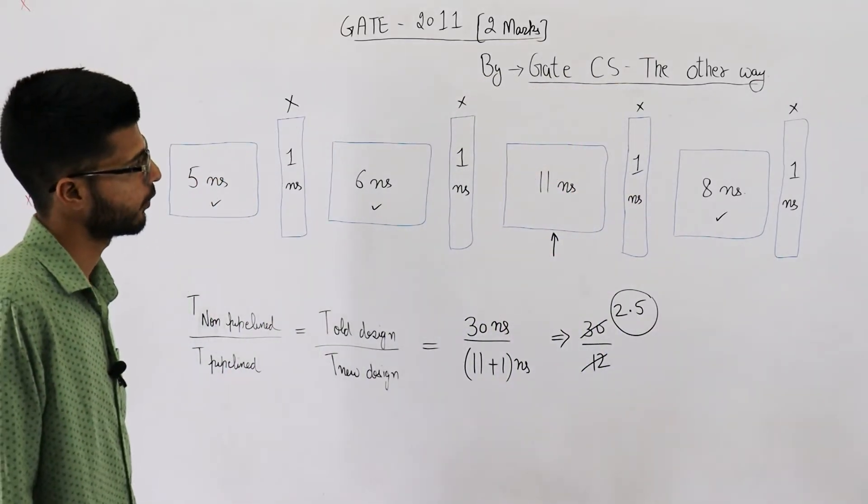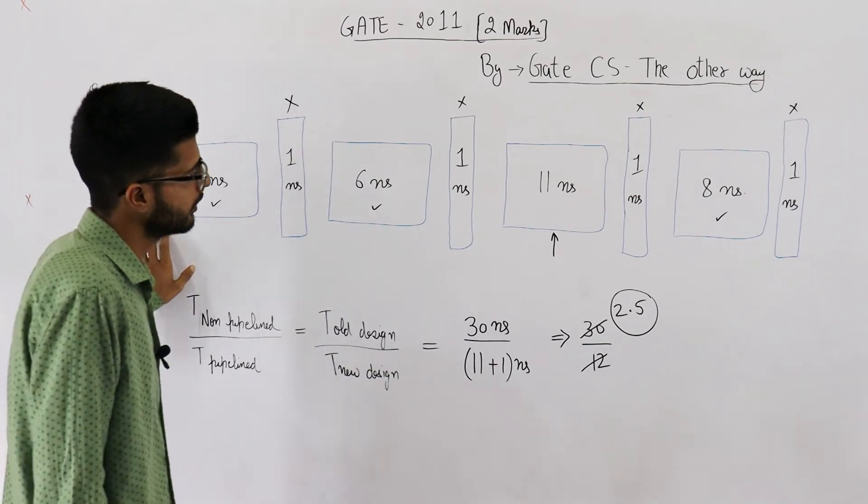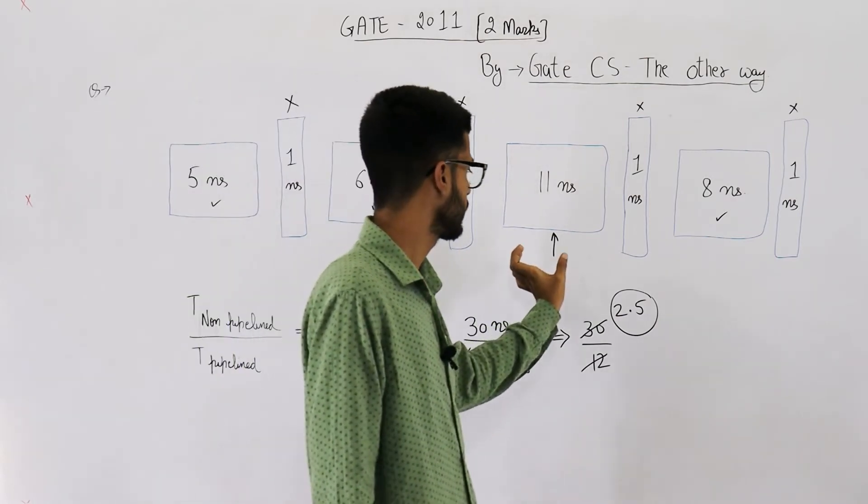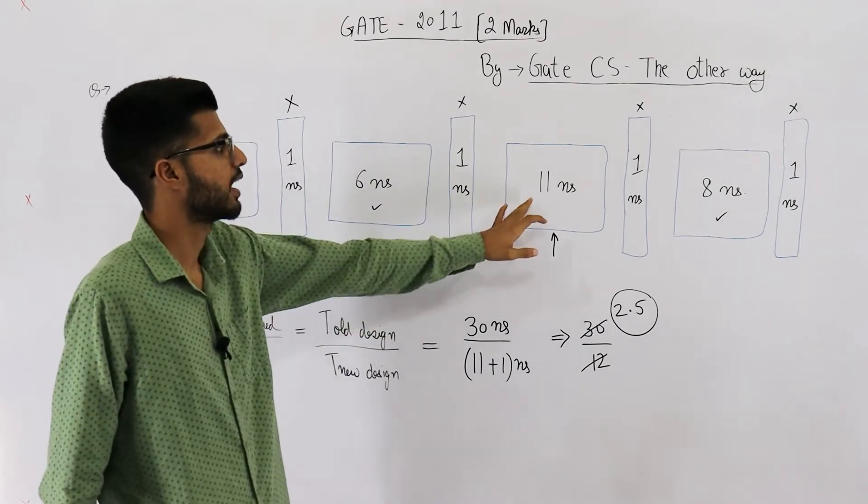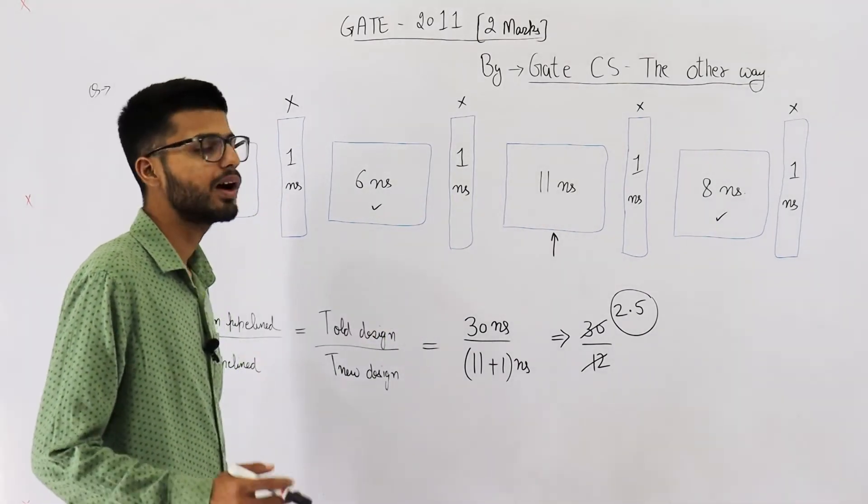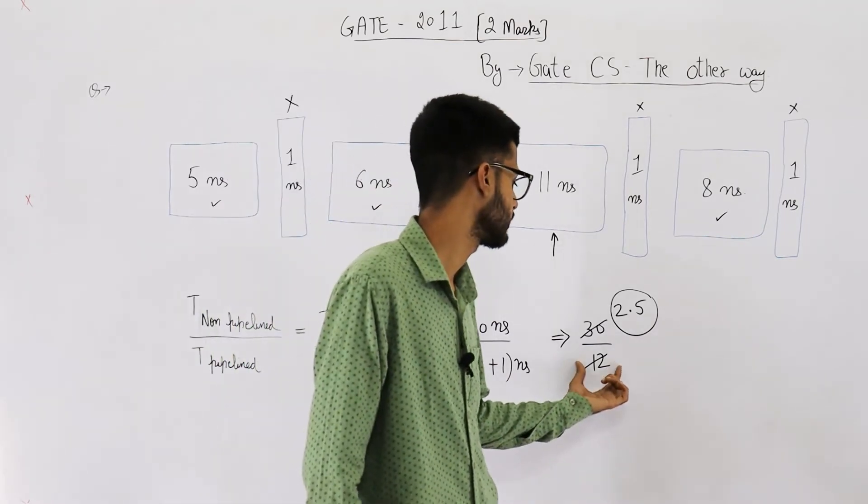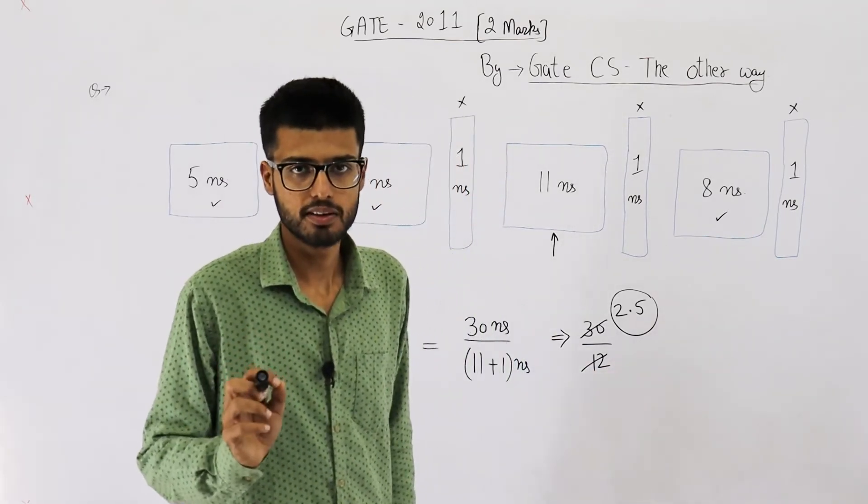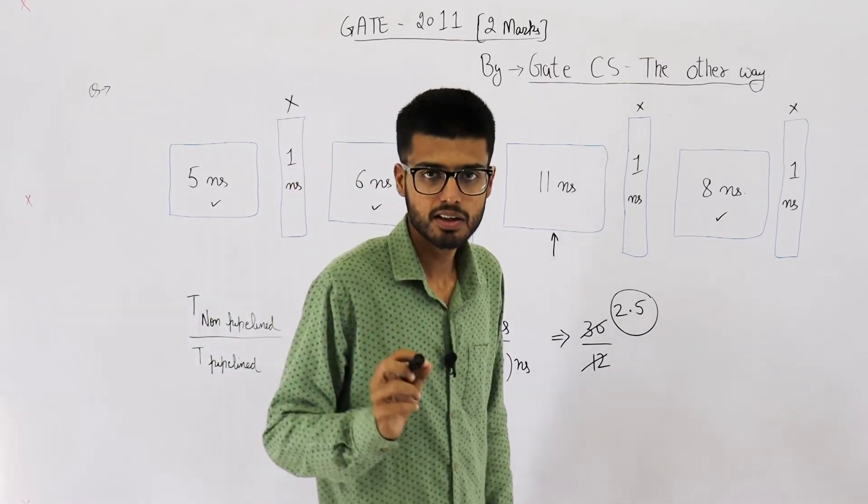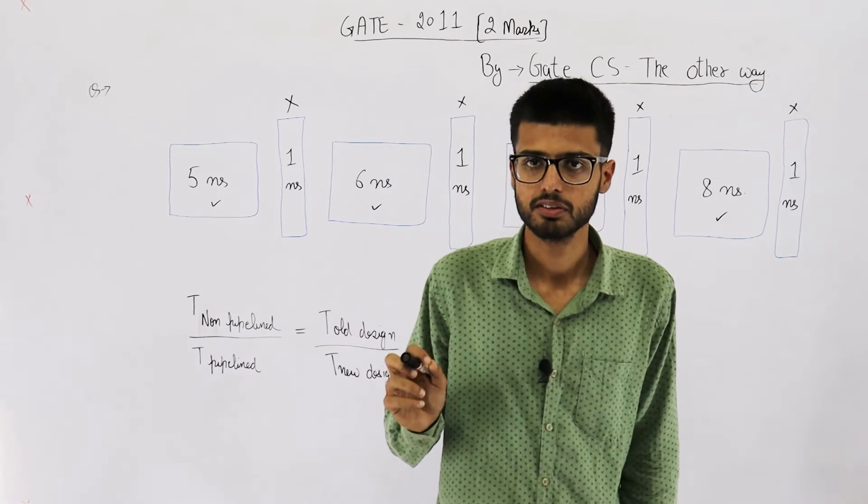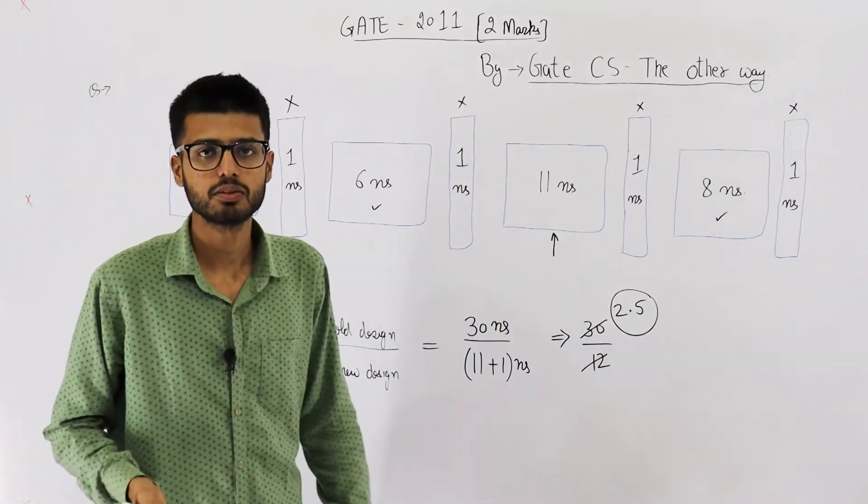Now one thing that you need to know is that we are calculating the time period of clock, which is 11 plus 1. How am I saying that one instruction is going to require these many seconds? That is because of the reason they haven't given number of instructions. When they haven't given any number of instructions, you can assume infinitely many instructions.